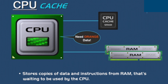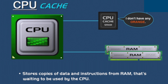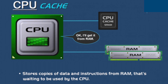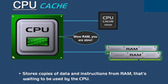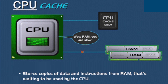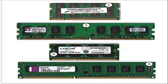RAM stores copies of data and instructions waiting to be used by the CPU. This is a form of computer memory that can be read and changed in any order, typically used to store working data and machine code on a temporary basis for quick access during use of a computer program or software on your operating system. This is much faster than a storage device in your computer. RAM is the main memory in your computer.